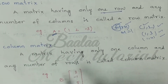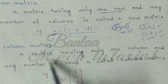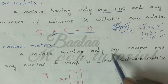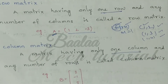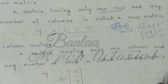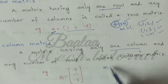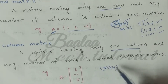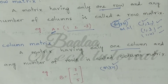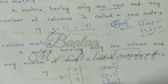Second one is column matrix. A matrix having only one column is called a column matrix. The number of rows can be any number, but n equals 1. So examples are 2 by 1, 3 by 1 — any matrix where there is only one column.